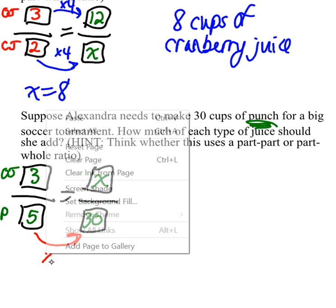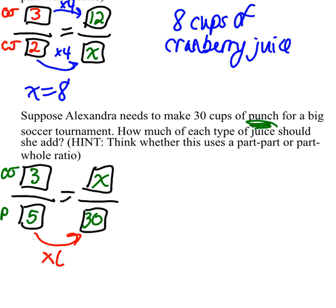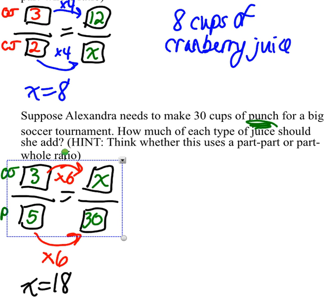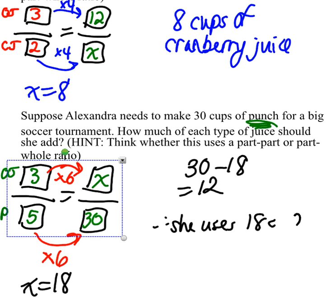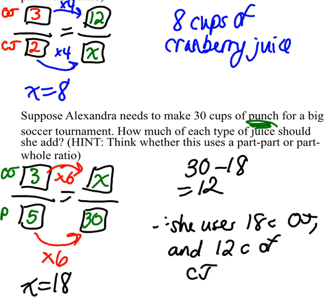I can see 5 times 6 got me 30, so 3 times 6 will get me 18 — that's going to be orange juice. Now to get cranberry juice, I can set up another proportion using 2 over 5, or I can just say 30 cups of punch minus 18 cups of orange juice leaves 12 cups of cranberry juice. Therefore, she uses 18 cups of OJ, or orange juice, and 12 cups of CJ, or cranberry juice.